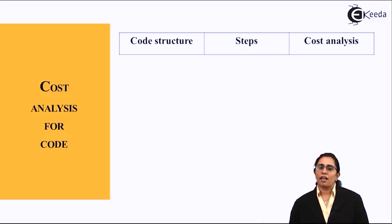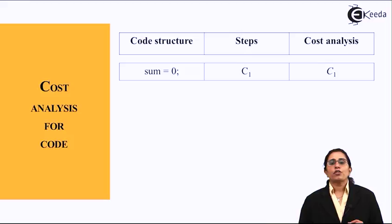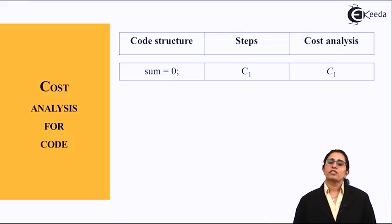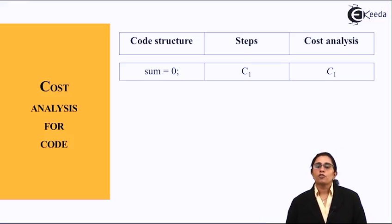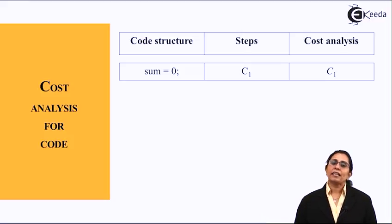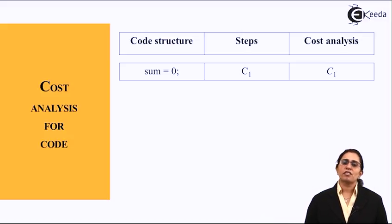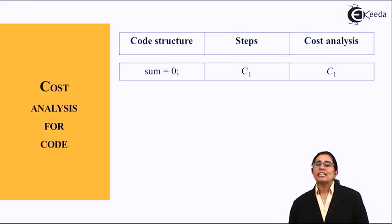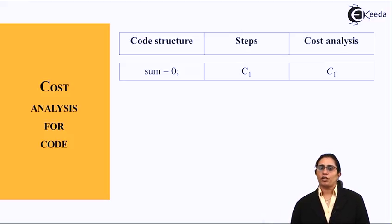For cost analysis, we examine code structures and their steps. For a simple assignment statement such as sum = 0, it is given a constant step cost c1. The cost for this assignment statement is c1.